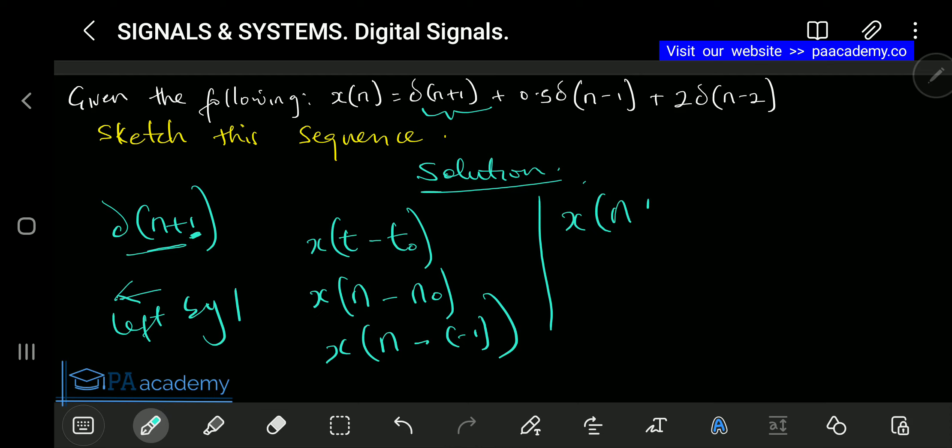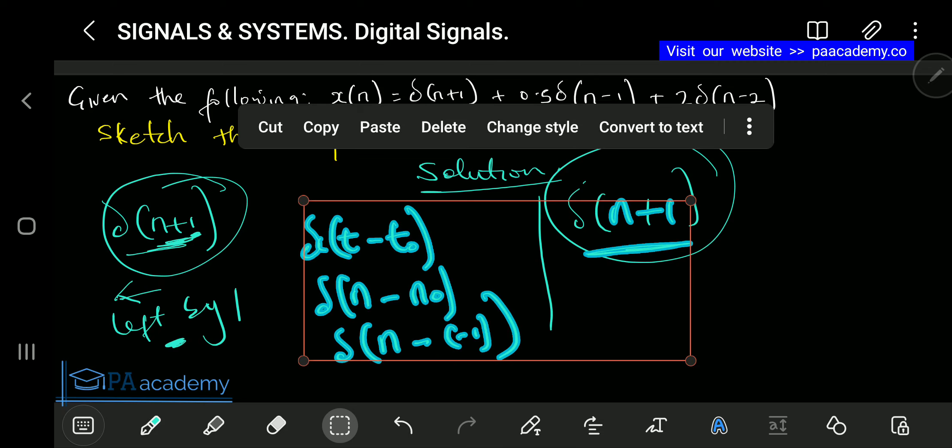You can see what we are having here is exactly this. I could have also replaced this x with the delta that was used. You can see what we are having here is the same thing as what we are having here. By virtue of that, that means we are shifting it to the left. I just want to establish why we are shifting it to the left.